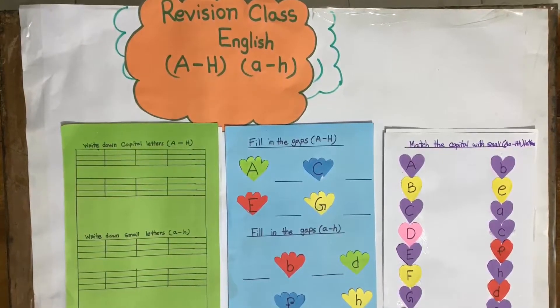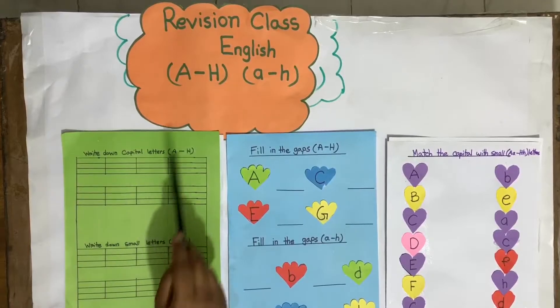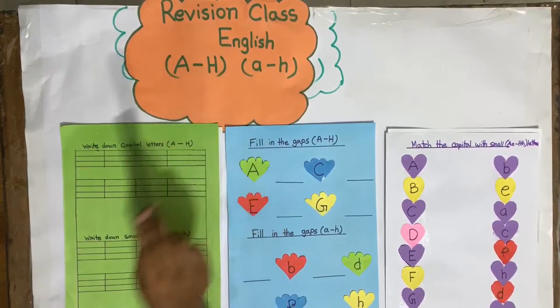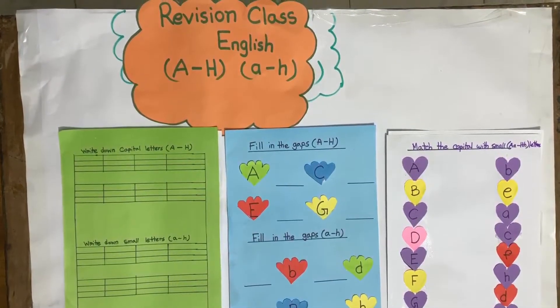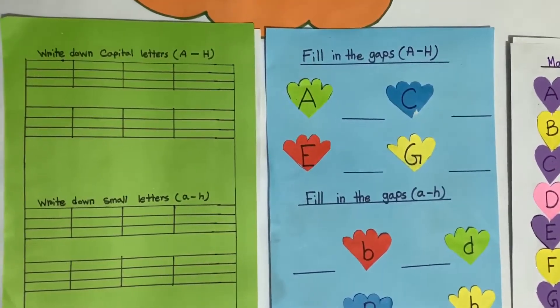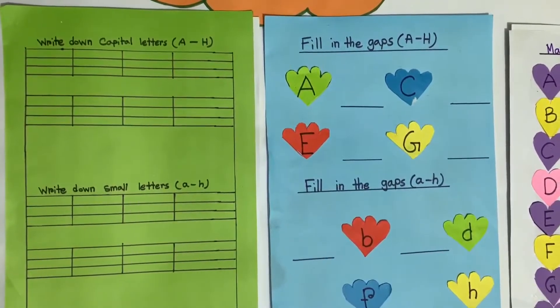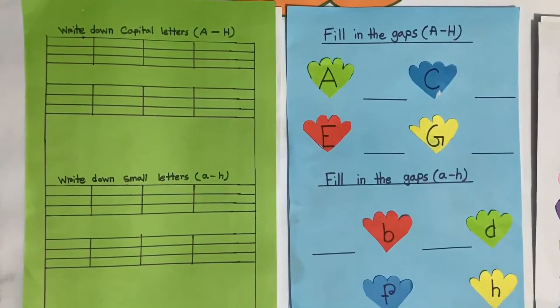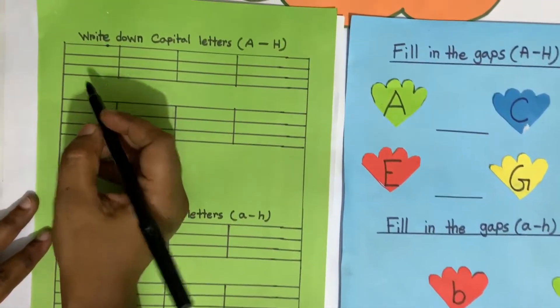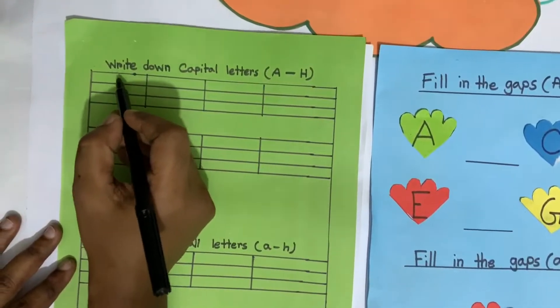Yes — capital letter A to H and small letter A to H. Now we will write down first capital letters A to H in the box, and you will read with me these letters. Say loudly, everyone. First I will write them here.